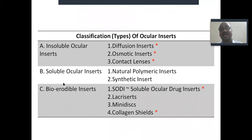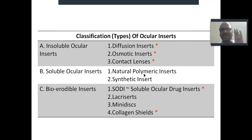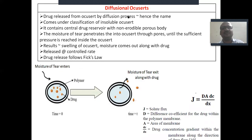Classification of accuserts: insoluble, soluble, and bioerodible — which degrade in the body itself. Types include diffusion insert, osmotic insert, contact lenses, and natural polymer-based inserts. Soluble ocular drug inserts include SODI, lacrisert, mini disc, and collagen shield. A diffusion accusert works by moisture entering from the tears into the accusert, and then exiting along with the drug. This follows Fick's equation, according to which the rate of drug release is determined.